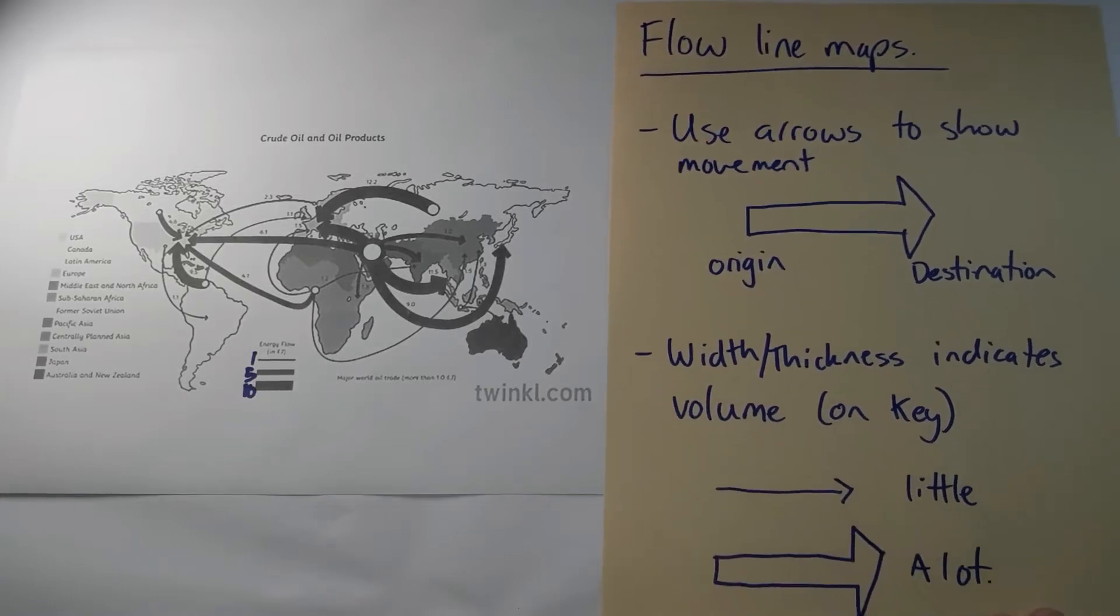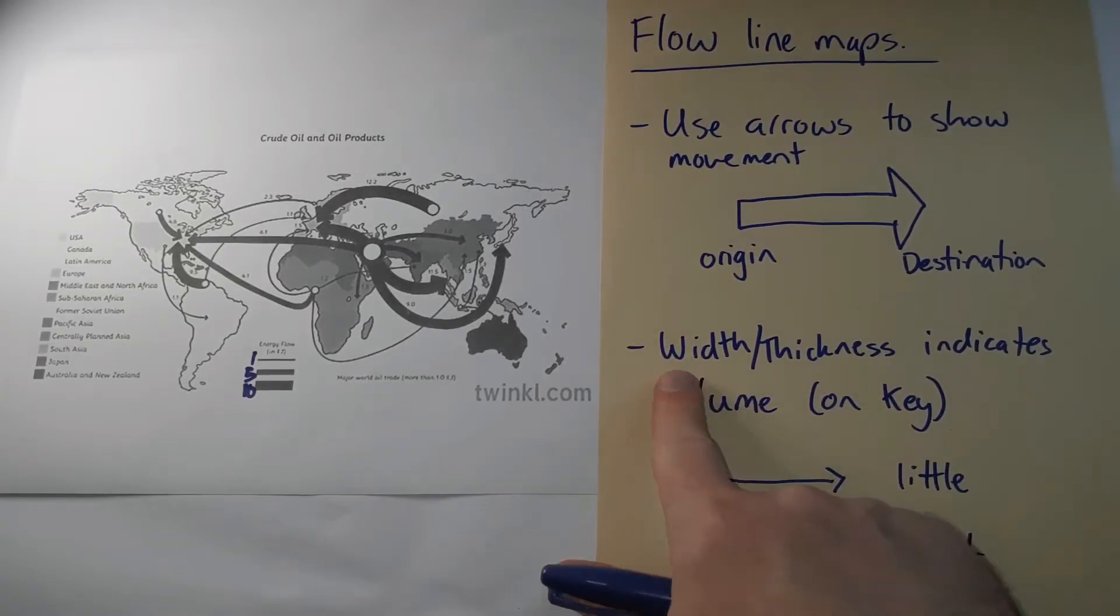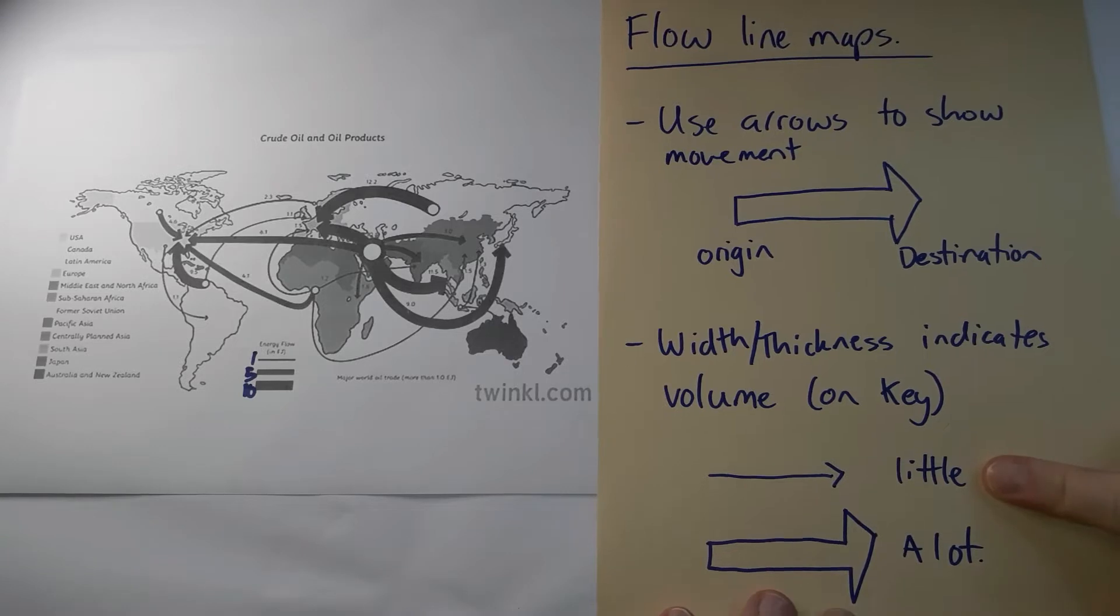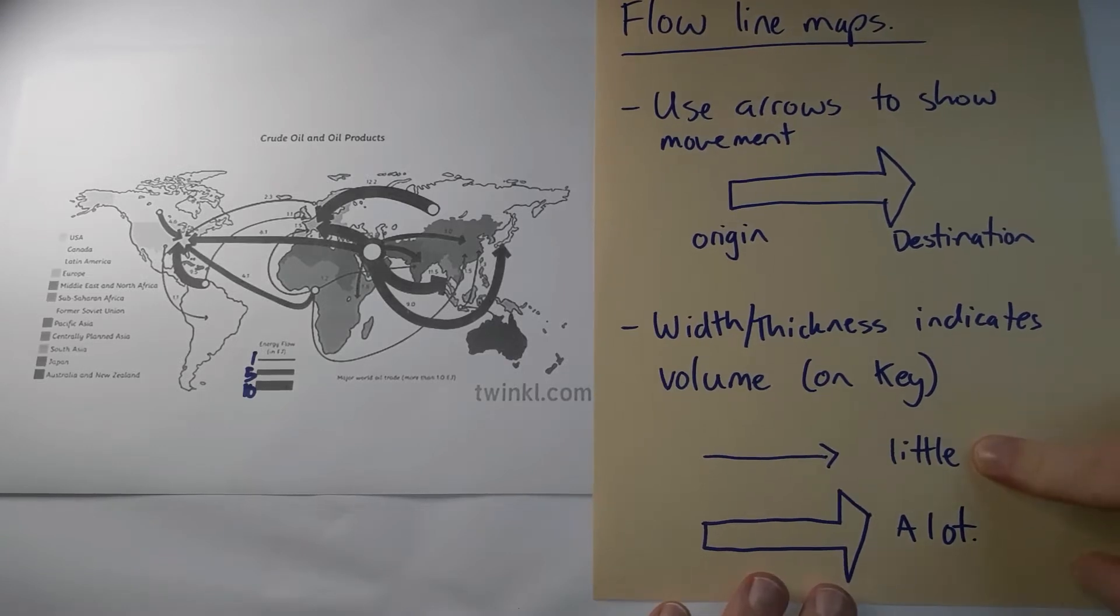The other thing you should notice about these arrows is how wide they are. Their width or thickness indicates the volume of flow. The general idea is the thinner the arrow, the less movement of whatever feature's being mapped, and the thicker the arrow, the larger the volume of whatever's being mapped.